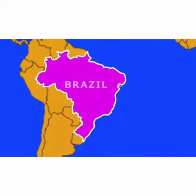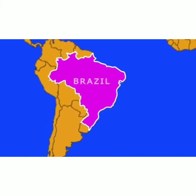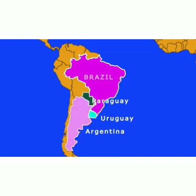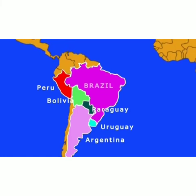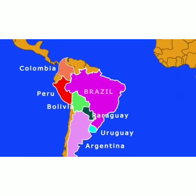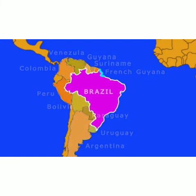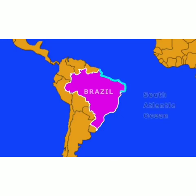Coming to the neighboring countries: the countries that lie to its south are Uruguay, Argentina and Paraguay. The countries lying towards its west are Bolivia and Peru. The countries lying towards its north are Colombia, Venezuela, Guyana, Suriname and French Guiana. Brazil has a long coastline along the South Atlantic Ocean.